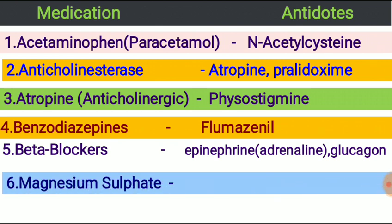Next, magnesium sulfate. Magnesium sulfate is used for eclampsia and prophylaxis of eclampsia. The antidote of magnesium sulfate is calcium gluconate.